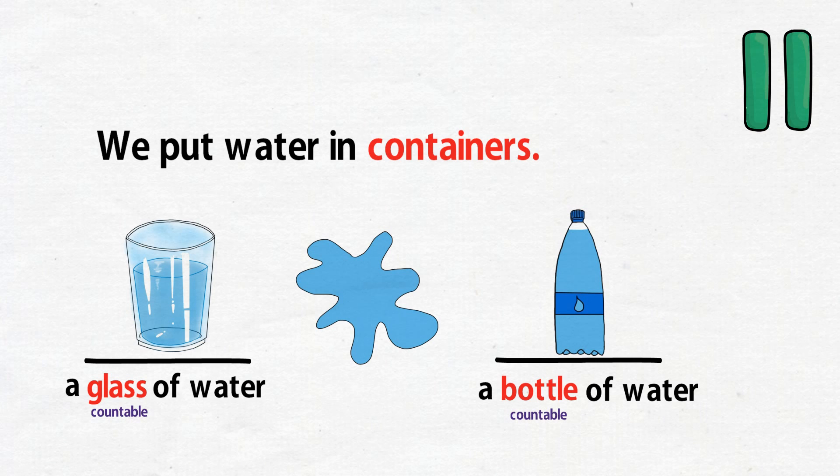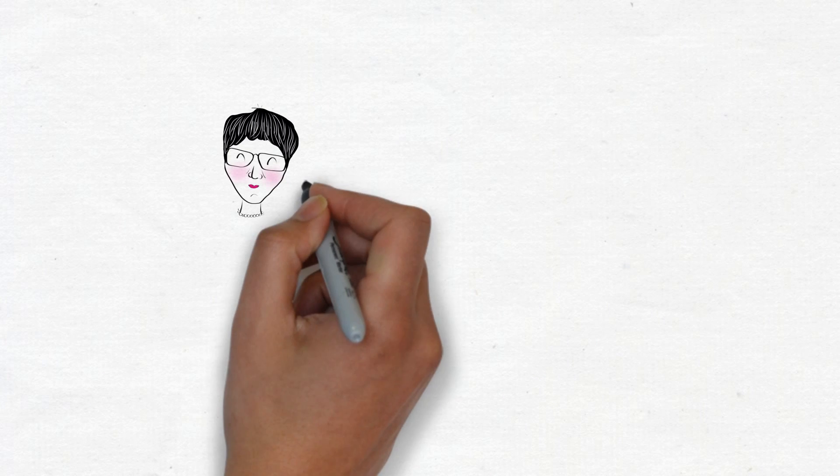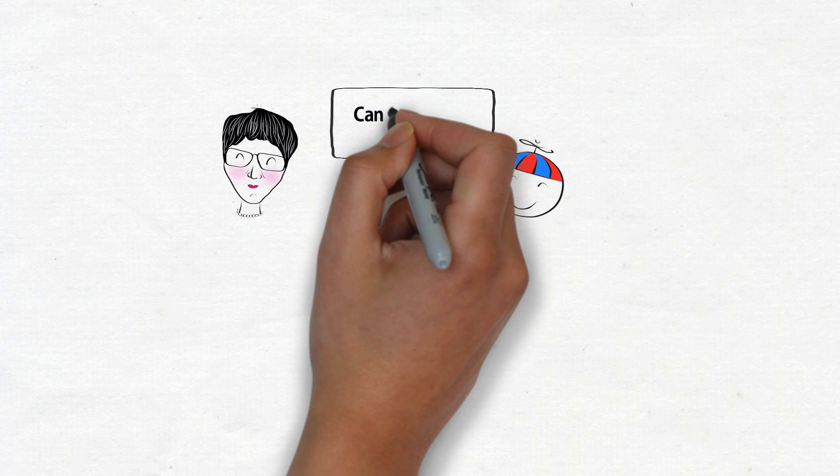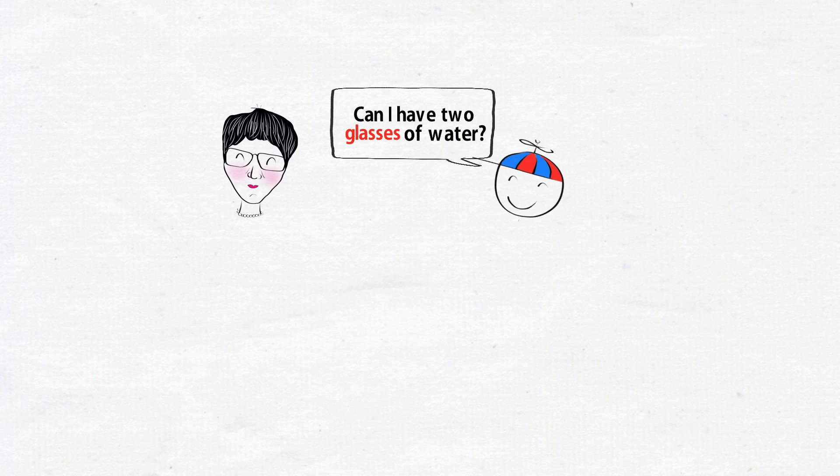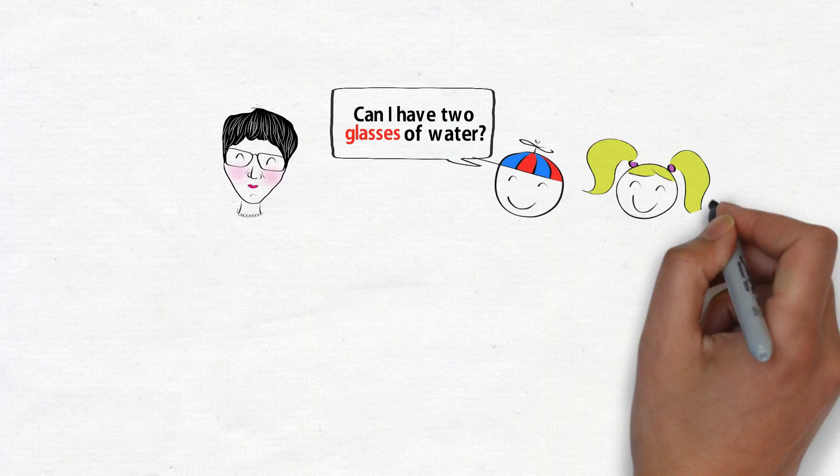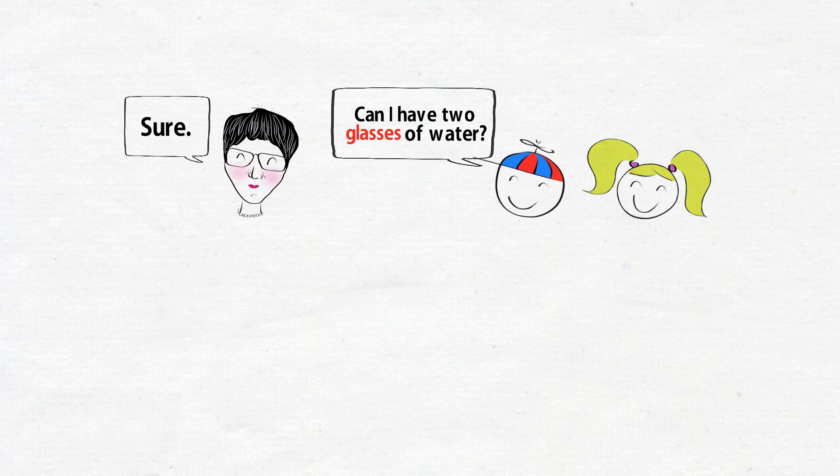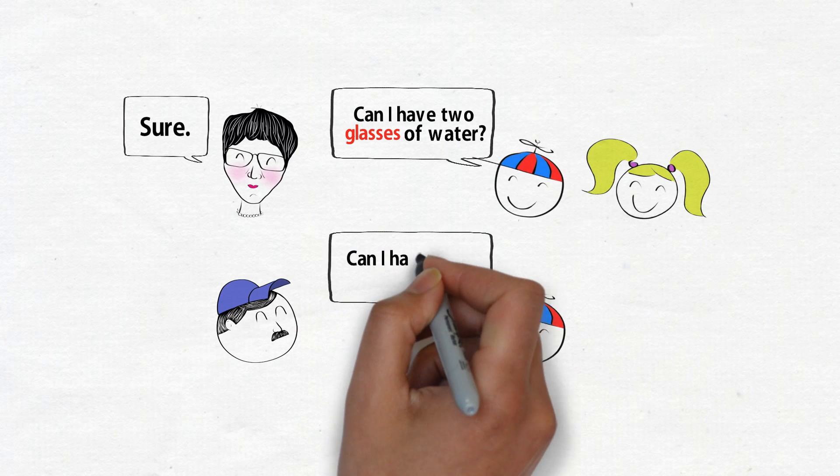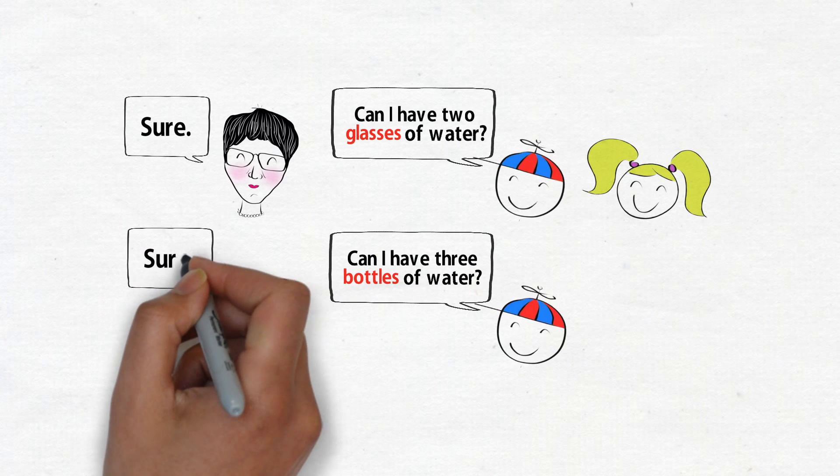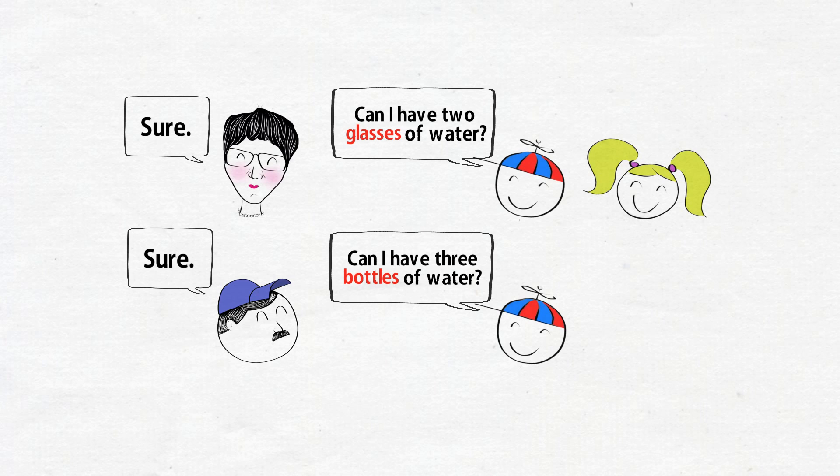You can ask your mom for two glasses of water for you and your sister, for example. Or you can ask for three bottles of water at your local shop.